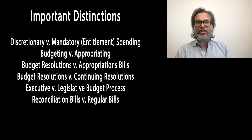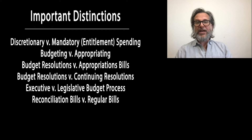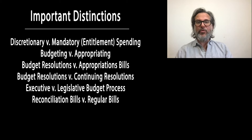Mandatory spending is money the federal government spends that is already automatically appropriated based on previously passed bills. It is not up for negotiation or reduction in the annual budget appropriations process, because those monies have already been promised by a statute that establishes permanent criteria for spending. The U.S. Constitution requires that every dollar the federal government spends be appropriated through a law passed through the regular legislative process.